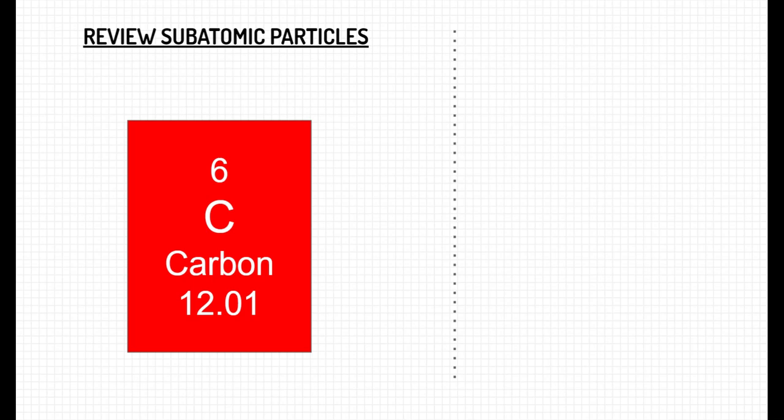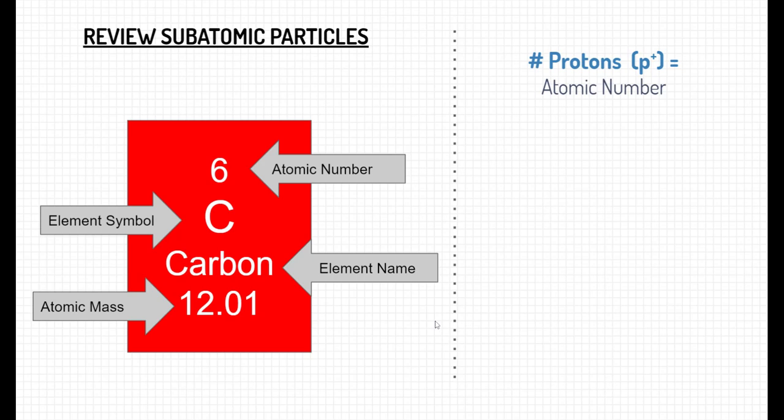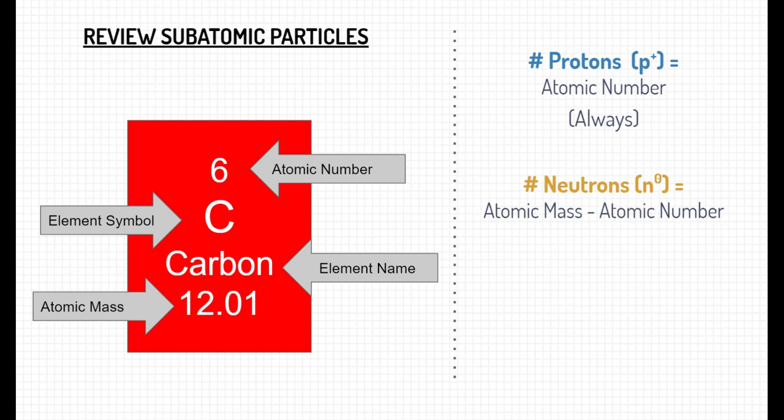Well, first let's review some of the essential subatomic particle information we can get from the periodic table. Remember that the periodic table tells us the atomic number, the element symbol, the element name, and the average atomic mass. This information lets us know the number of protons—that's the atomic number. The number of neutrons is the atomic mass minus the atomic number. If we take the average mass minus the atomic number, that's the average isotope.